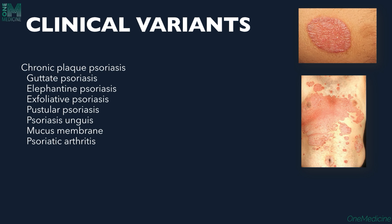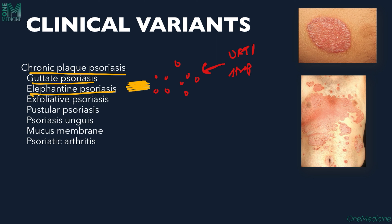Clinical variants: the classic lesion of psoriasis shows an erythematous well-defined plaque with scaling. Other variants include chronic plaque psoriasis; guttate psoriasis, with drop-like erythematous papules and pustules appearing after upper respiratory tract infection with streptococcus; elephantine psoriasis with huge hyperkeratotic scales; exfoliative or erythrodermic psoriasis; pustular psoriasis; psoriasis of nails and mucous membranes; and psoriatic arthritis.